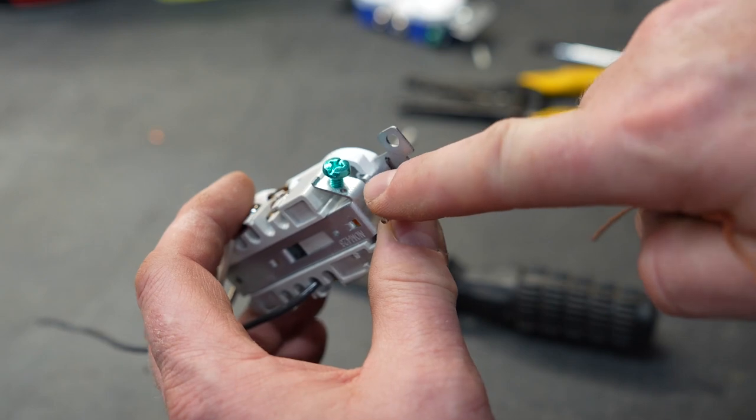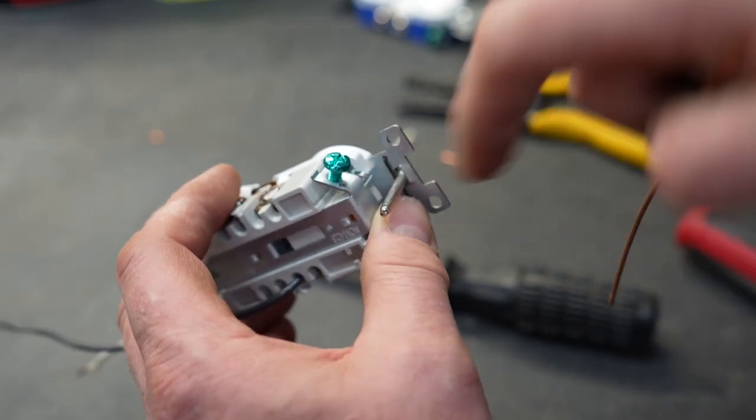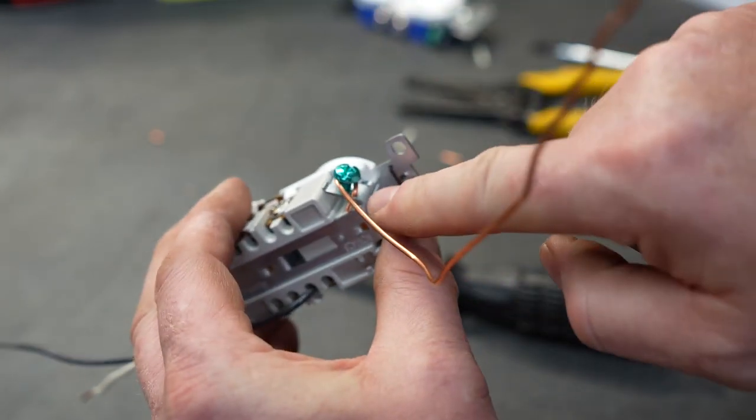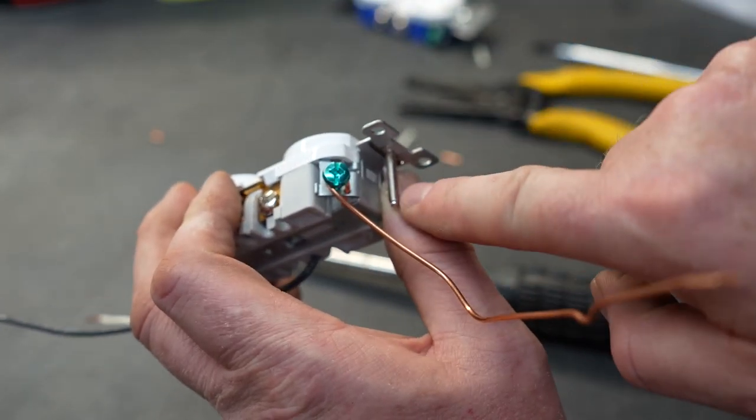The grounding lug on this also has another little nifty feature. There's a hole right there allowing you to take the ground wire, put it through the hole, wrap it around the screw, and it made the loop for you. You just need to tighten the lug down and you're good to go.